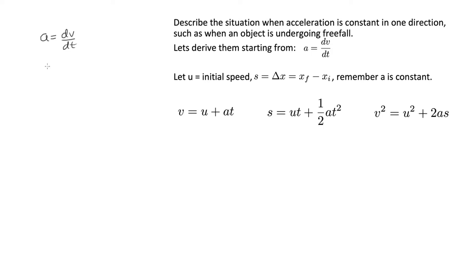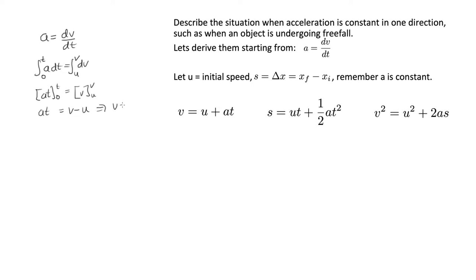Writing a dt = dv and integrating both sides — from t = 0 (speed u) to time t (speed v) — gives at = v − u, which rearranges to v = u + at. This is the first kinematic equation.